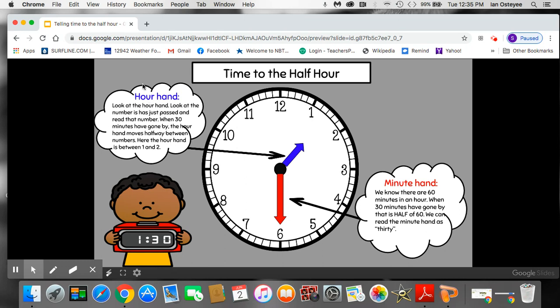Let's talk about how to tell time to the half hour. Hour hand. Look at the hour hand. Look at the number it has just passed and read that number. Okay, so it's just past the number 1 so I'll say 1. When 30 minutes have gone by the hour hand moves halfway between numbers. Here the hour hand is between the 1 and the 2. You can see it's halfway between because 30 minutes have gone by.